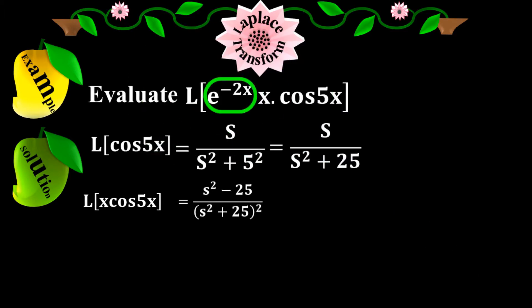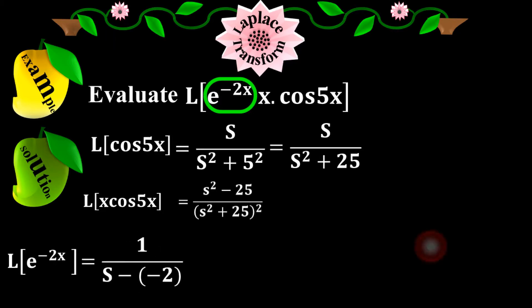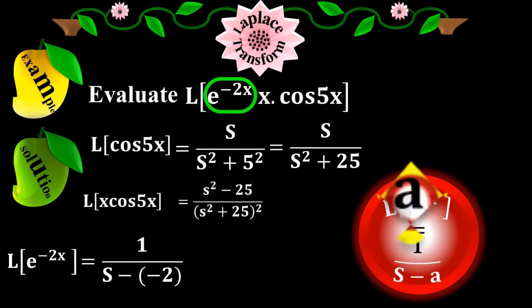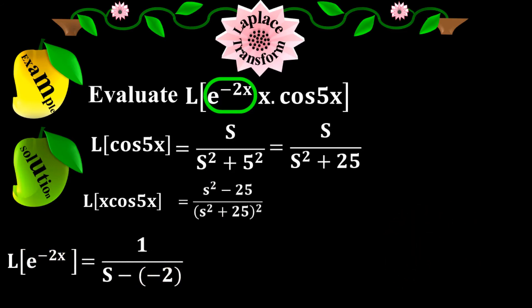Now pick the exponential function e to the minus 2x. The Laplace of e to the minus 2x equals 1 over s minus (minus 2), applying the elementary condition that the Laplace of e to the ax equals 1 over s minus a, where a equals minus 2. This gives 1 over s plus 2, since minus times minus is plus. This is the final value for e to the minus 2x.